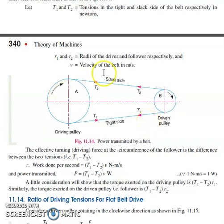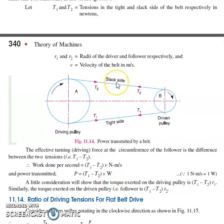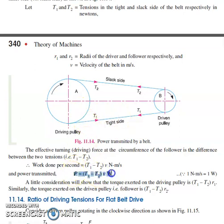The slack side is the top side of the belt, which has some looseness, while the tight side is the bottom side where there is very effective contact between the pulley and belt. The formula for power transmission is: P = (t1 − t2) × v, where t1 is the tension on the tight side and t2 is the tension on the slack side.